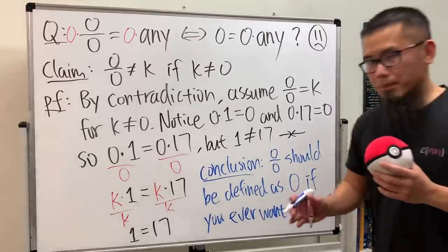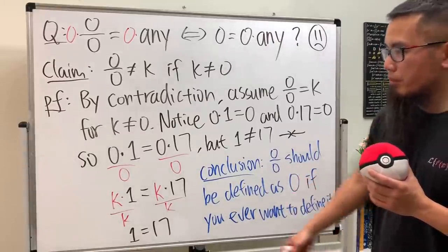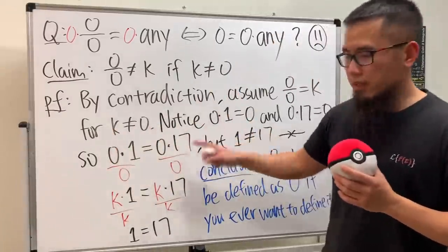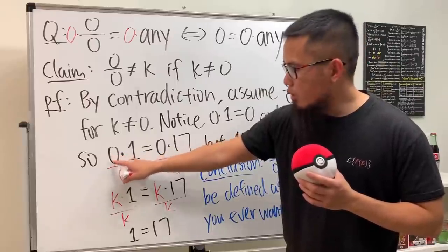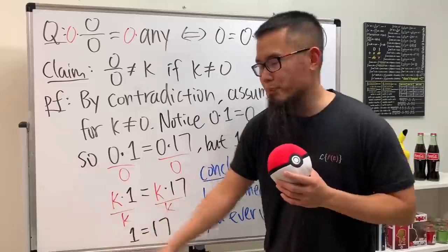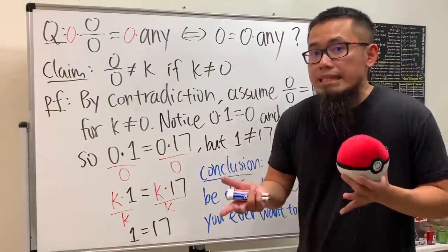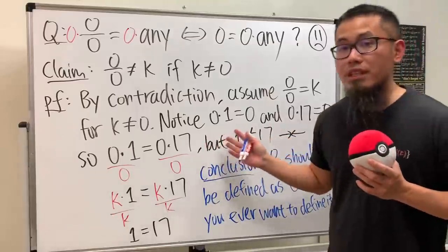Why? Because if you say zero over zero is equal to zero, then let's look at here. Zero over zero is equal to zero, so you get zero times one which is zero, and then you get zero times 17 which is zero. At least we don't get a contradiction like this.